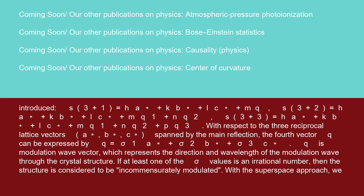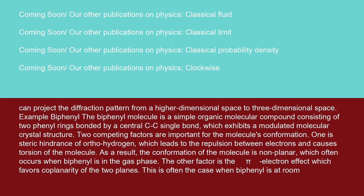Q is the modulation wave vector, which represents the direction and wavelength of the modulation wave through the crystal structure. If at least one of the σ values is an irrational number, then the structure is considered to be incommensurately modulated. With the superspace approach, we can project the diffraction pattern from a higher-dimensional space to three-dimensional space.